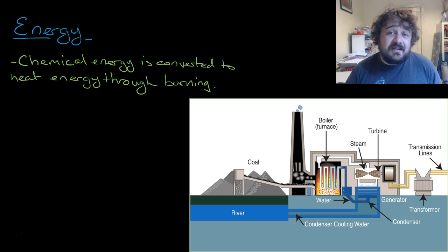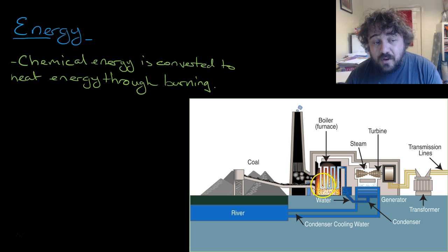Chemical energy is converted to heat energy through burning. So there is energy in this coal, stored in this coal, chemical energy. And then it goes for an energy transformation as we burn it up. It now turns into heat energy.